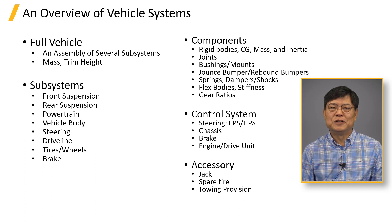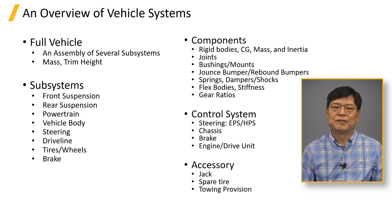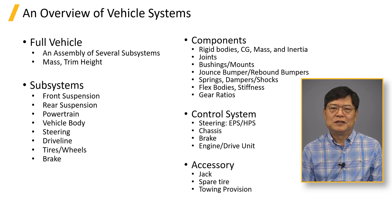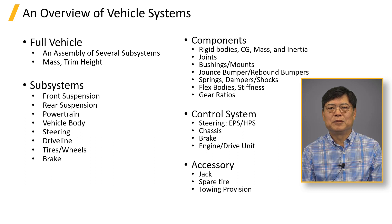They should also understand vehicle systems not directly related to vehicle dynamics performances. Deliverables from vehicle dynamic analysis are displacement, velocity, acceleration, force, and moments from the vehicle system. A full vehicle model is an assembly of several vehicle subsystems. The number of passengers, cargo, and trim height of the vehicle should be comprehended properly.